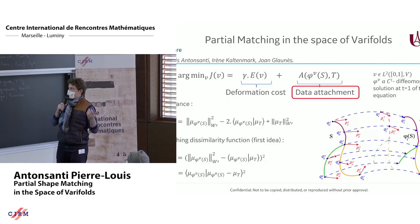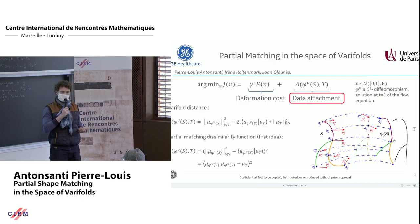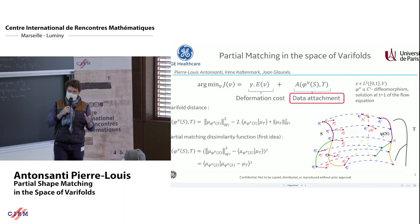We know the labels of the atlas, and with large deformation diffeomorphic metric mapping, we are registering a source onto a target and then transferring the labels. However, in most cases the atlas is way simpler than the target, and the classic metrics that one can use in such a framework are not working.